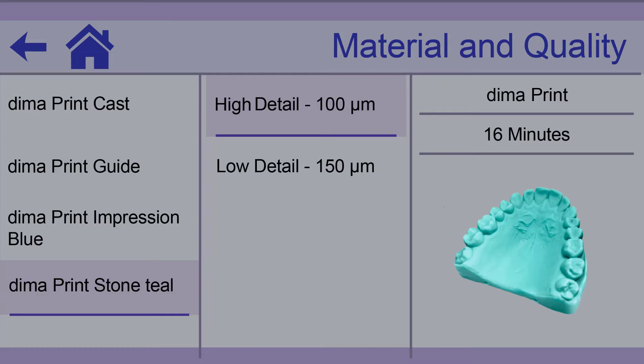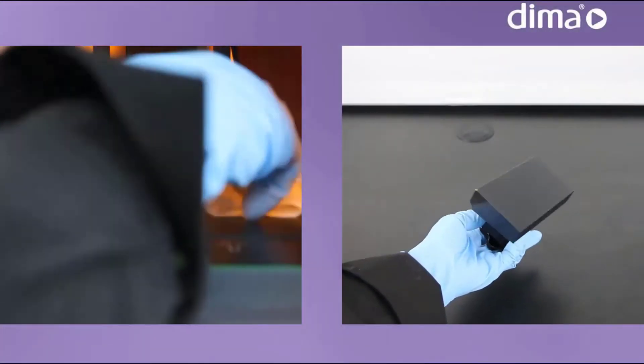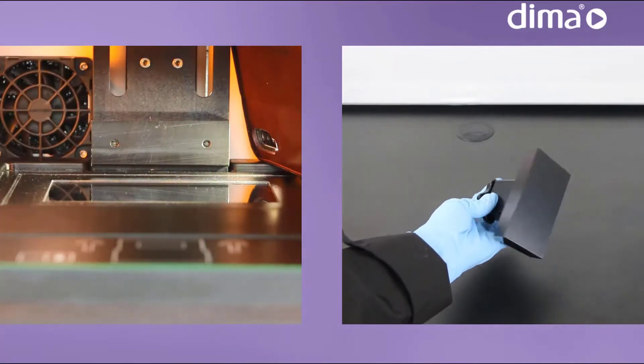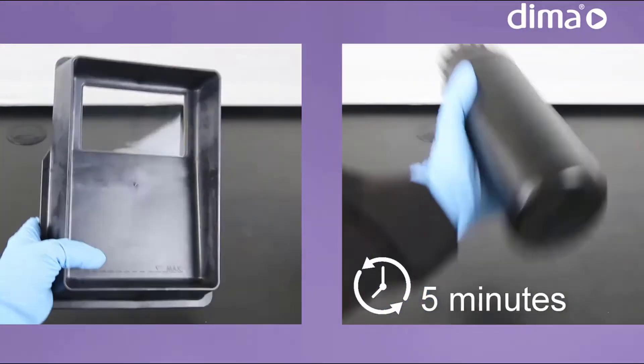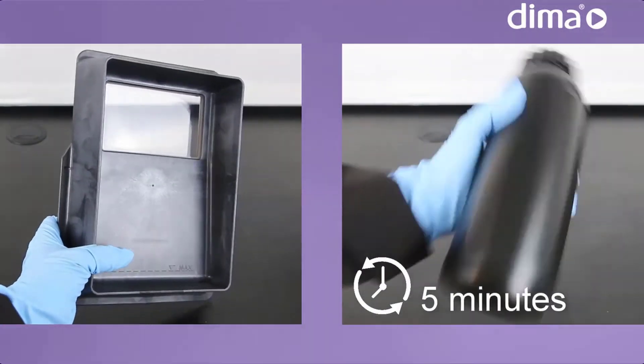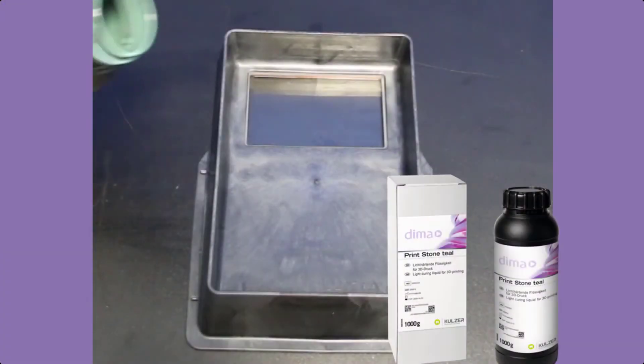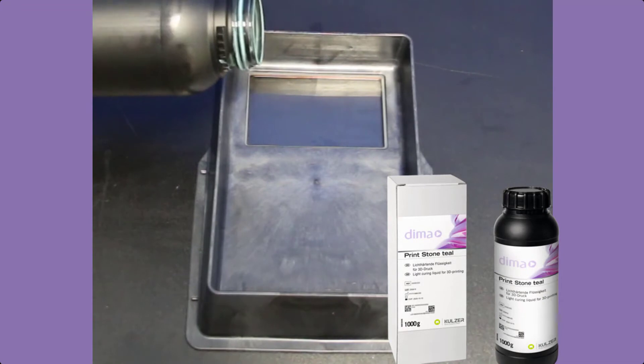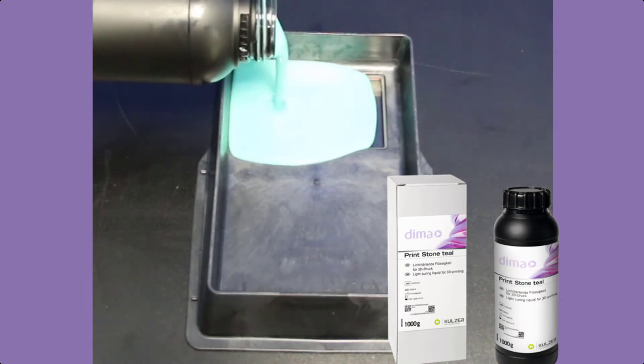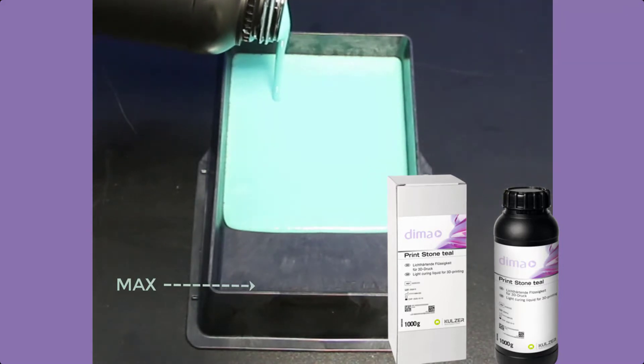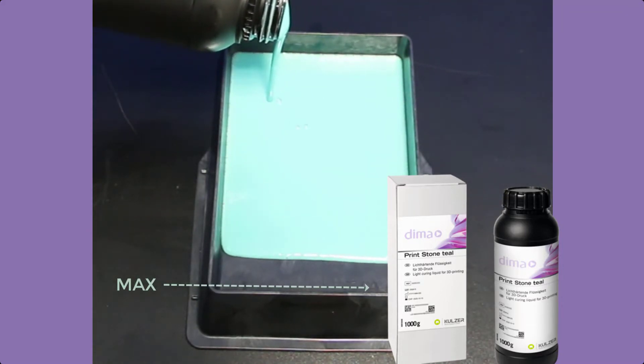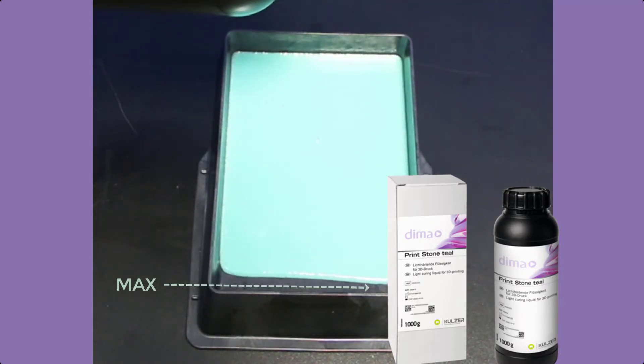After you have checked the printing area inside the printer, the material tray, and the printing platform for cleanliness and have shaken the material for five minutes, fill it into the tray. Always fill the tray to the maximum line. This way you avoid bubbles in the print and prevent running out of material during printing.